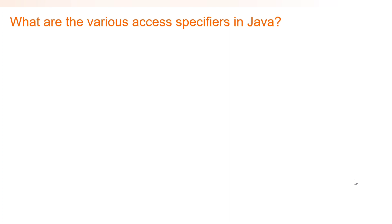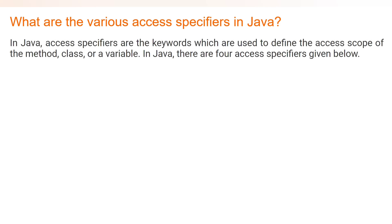Hello friends, welcome to Code Crush Coding. In this video we are going to learn some Java interview questions. So let's start. The first question is: what are the various access specifiers in Java? In Java, access specifiers are the keywords which are used to define the access scope of the method, class, or a variable.